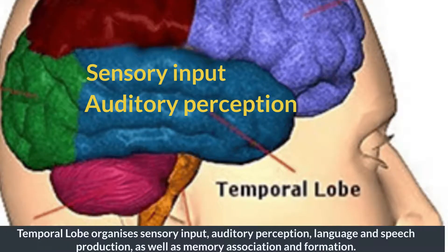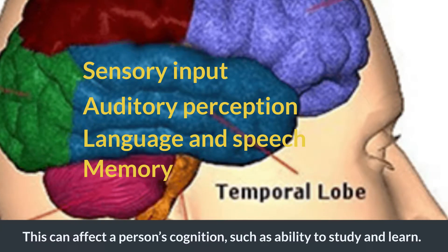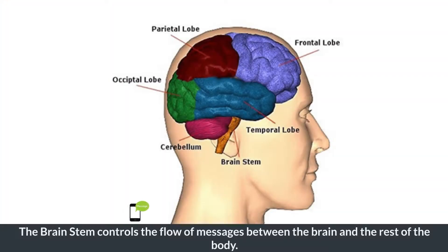The temporal lobe organizes sensory input, auditory perception, language and speech production, as well as memory association and formation. This can affect a person's cognition, such as their ability to study and learn.